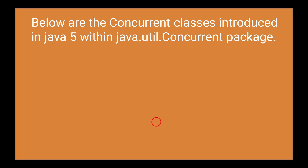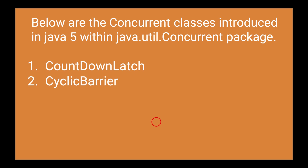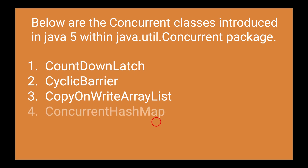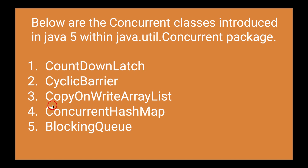The following concurrent classes have been introduced in the java.util.concurrent package: CountDownLatch, CyclicBarrier, CopyOnWriteArrayList, ConcurrentHashMap, and BlockingQueue. Depending on your requirement, you can use any one of these concurrent classes. If a ConcurrentModificationException is being thrown, we can use CopyOnWriteArrayList, ConcurrentHashMap, or the Collections utility class methods like synchronized map or synchronized list.